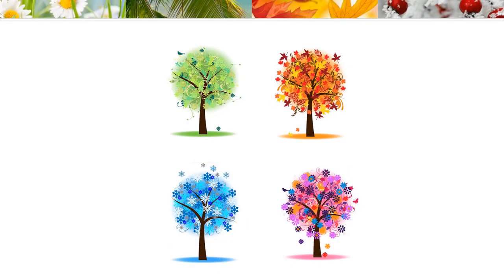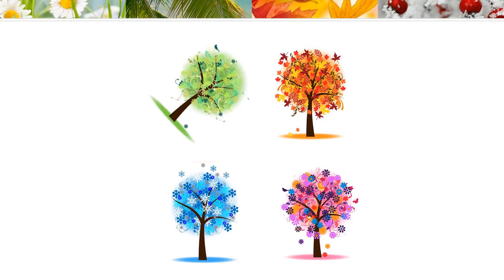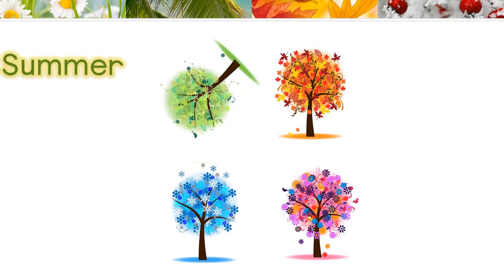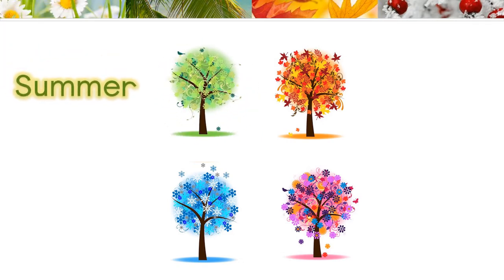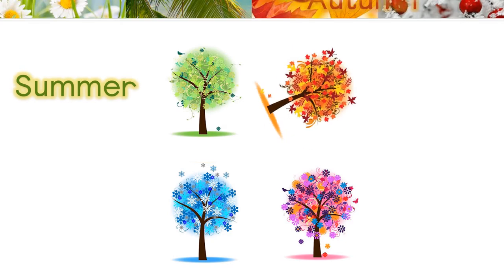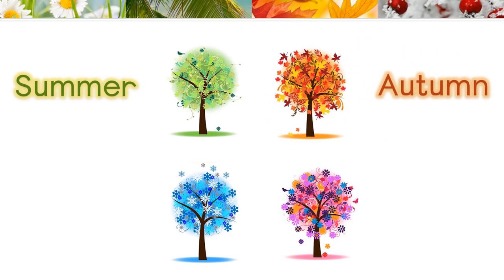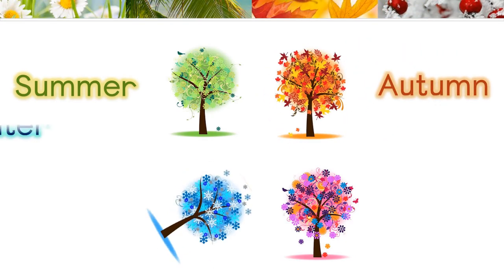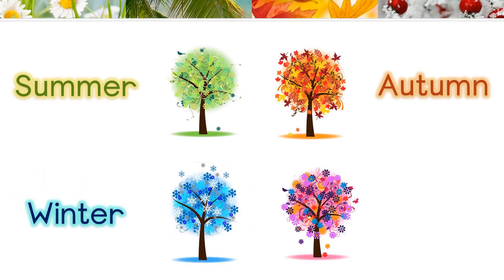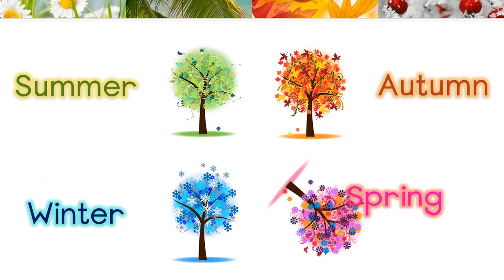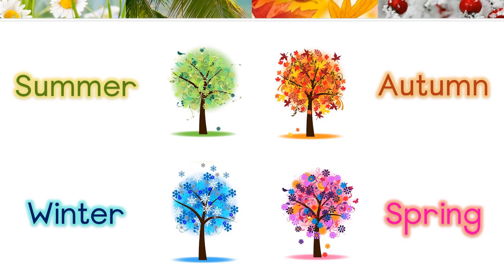There are four seasons in one year. We have summer, autumn, winter, and spring.